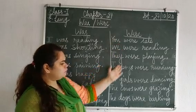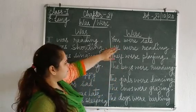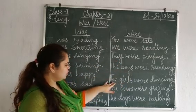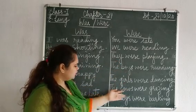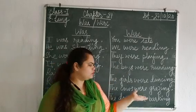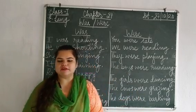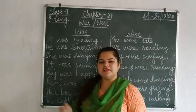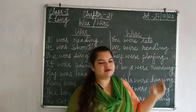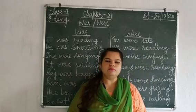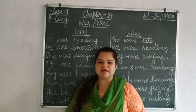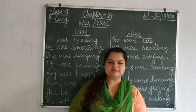So the nouns and pronouns used with were are: you, we, they, the boys, the girls, the cows, the dogs, or any noun which is in a plural form. So children, the word was is used for a singular item whereas were is used for a plural item. I hope you have understood this. We will be doing more exercises in the coming classes. Thank you.